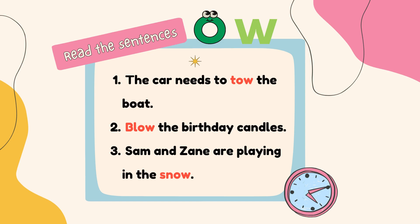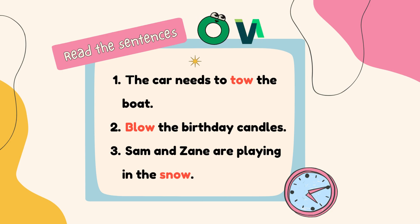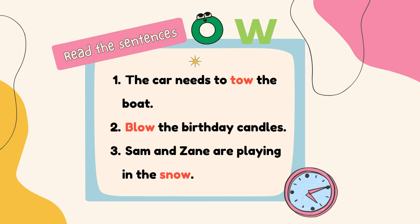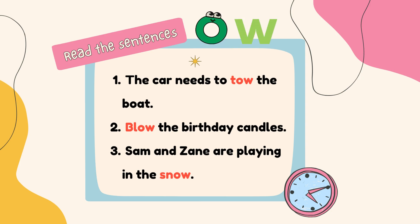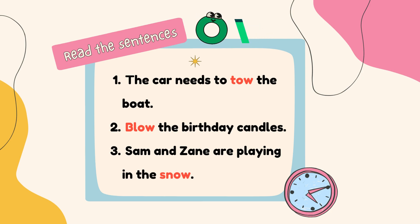Okay, the last one — we are left with O and W, but again it only makes the sound O. Number one: the car needs to tow the boat. Number two: blow the birthday candles. Number three: Sam and Zane are playing in the snow.